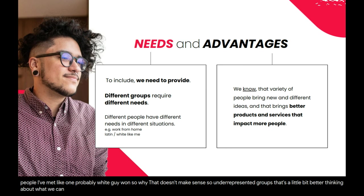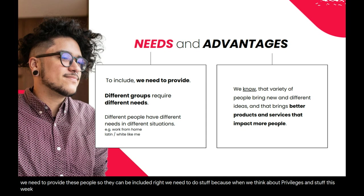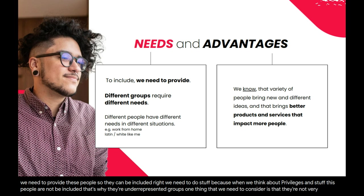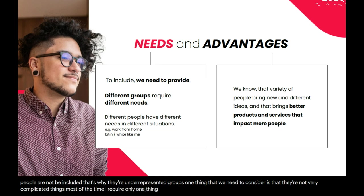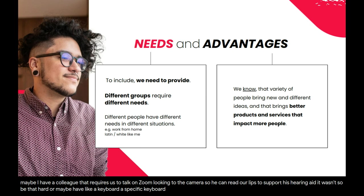Thinking about what we can do and what is good about diversity — we need to provide what these people need so they can be included. When we think about privilege, these people are not being included; that's why they're underrepresented groups. And often the things they need are not very complicated. I require only one thing: I want people to use my pronouns correctly. That wasn't supposed to be hard. Maybe a colleague needs us to look at the camera on Zoom so he can read lips to support his hearing aid. That's not hard either. We need to talk to people, see what they need, and provide it.